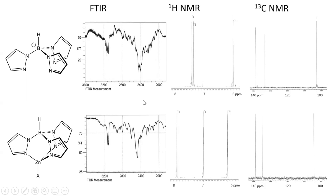The peaks at 3,150 to 3,200 inverse centimeters are the C-H peaks produced by the heterocycles. In the proton NMR, the three symmetrically equivalent pyrazole rings produce three signals, all with equal integration, creating a doublet-triplet-doublet splitting pattern. With the formation of the boron-nitrogen bond, we do not observe an N-H peak in the product like the one that exists in the starting material.